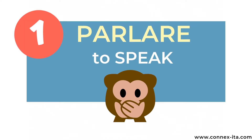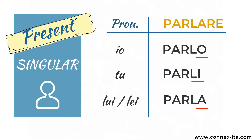Let's have a look at our first verb, which is PARLARE — that means to speak. Note that for not making this lesson too complicated, I'm only going to show you how to use these verbs in the present tense. This is how you conjugate PARLARE in the singular: io parlo, tu parli, lui/lei parla. It's very easy to learn regular verbs, as the only thing you need to remember is how they end for the different persons. The ending will always be the same for all the verbs that fall in the same class.